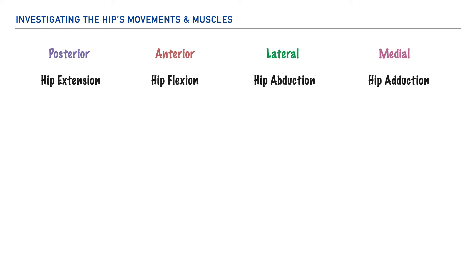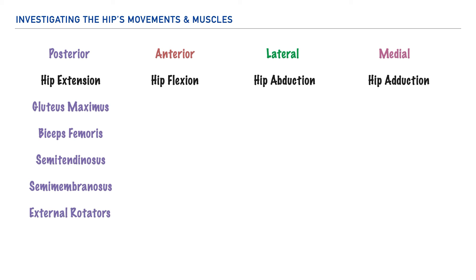Let's list the muscles underneath each of their respective locations. Posteriorly we have the gluteus maximus, biceps femoris, semitendinosus, semimembranosus, and the six deep external rotators — which by name also help perform external rotation of the hip. Anteriorly we have the iliacus, the psoas major, psoas minor, rectus femoris, and the sartorius.